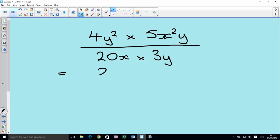On the top, 4 times 5, x squared, and y squared times y is y cubed. And on the bottom, 20 times 3, x times y. We get that.